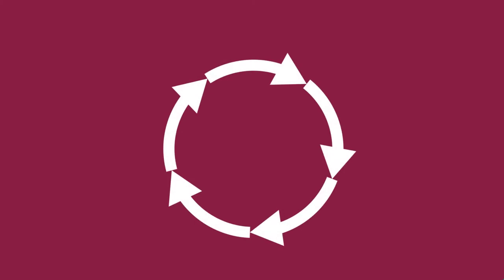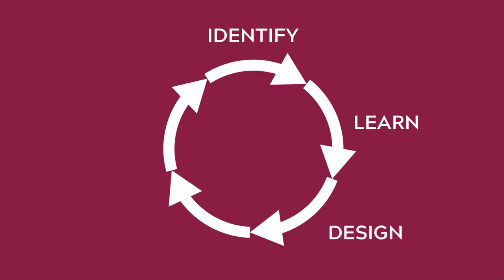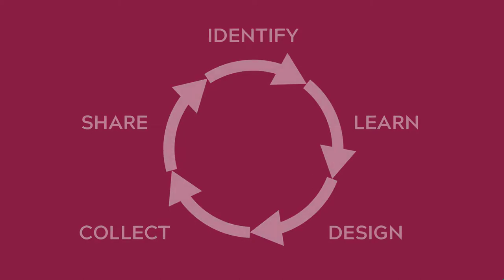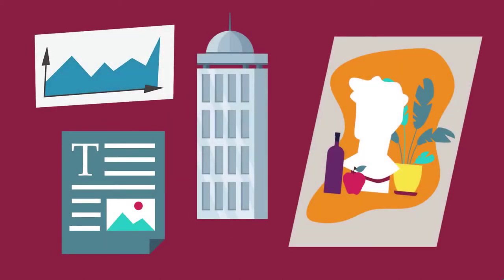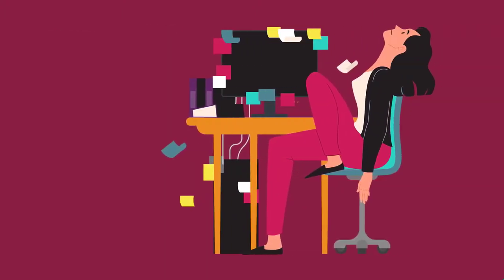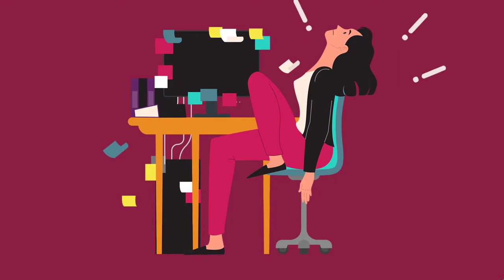But your process will be much faster and less well-documented than a formal research project. In a more formal process, this cycle becomes much more detailed and might look like this: identify a question or problem to investigate; learn about what others have already explored; design a method to gather, evaluate, and analyze evidence; collect and analyze your findings; and share your conclusions in some form, like a presentation, a painting, a building model, or a piece of writing.